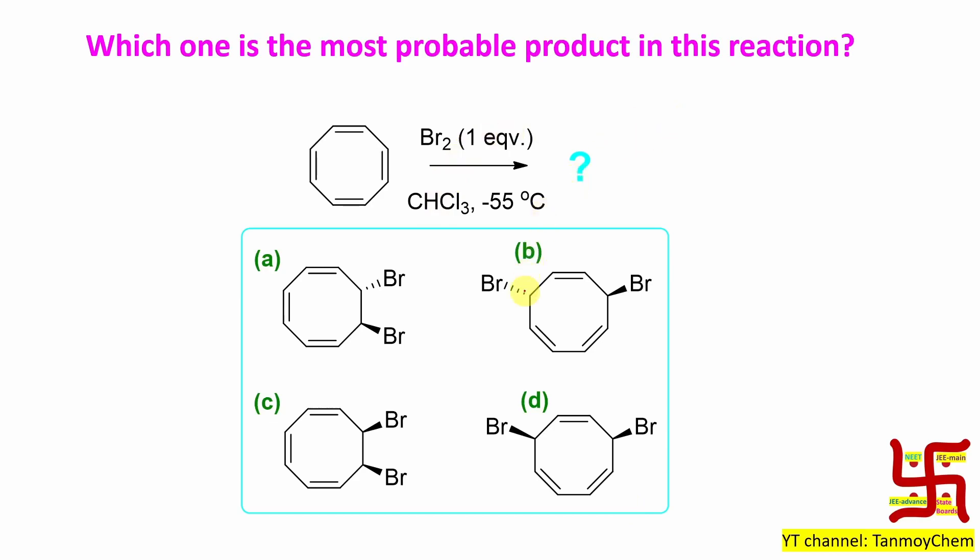Next. So which one is the most probable product? Obviously, 1,2-dibromo with anti-orientation, opposite. So option A. If you look at option B, it's a cis or syn. It's a syn, better word. So this is not possible. By the way, if you don't know this exact answer, you can find out how. Bromine, one equivalent and COT, it is a non-aromatic molecule, not anti-aromatic.